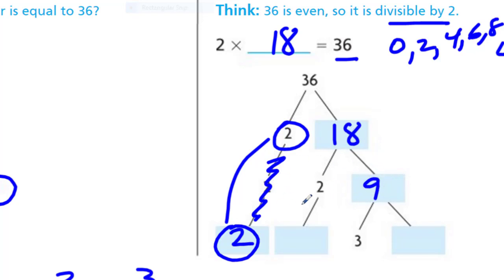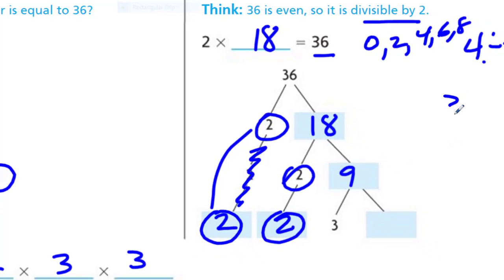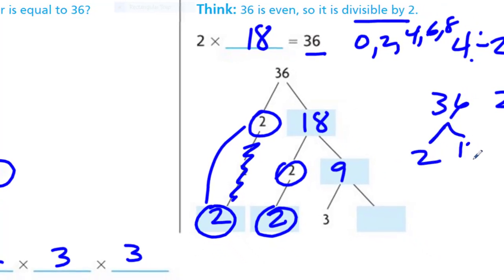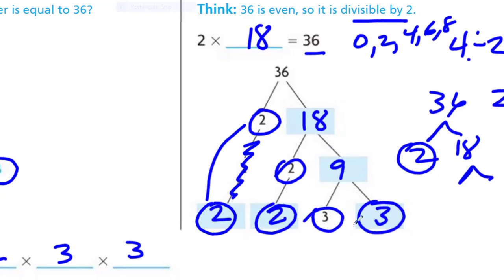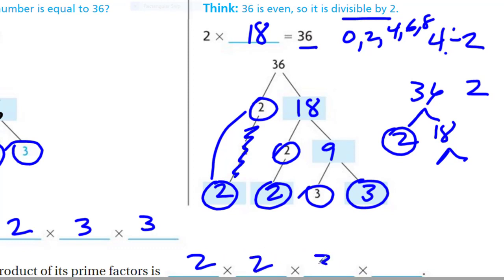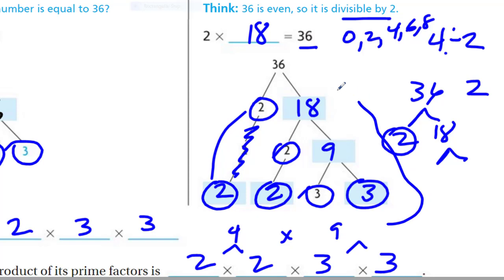So 9 goes as a branch from 18. The 2 is prime, so that's a flower at the end. Then 9 is 3 times 3, so we put our 3s there. Now we have 2 times 2 times 3 times 3 — which is exactly what we got with the factor tree method. Let's check our work: 2 times 2 is 4, 3 times 3 is 9, and 4 times 9 is 36. Yes it is! Both methods give us the same prime factorization.